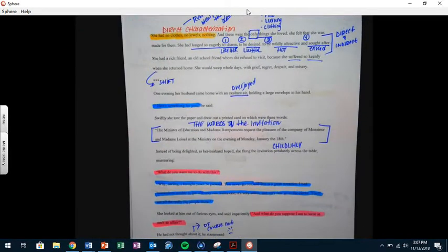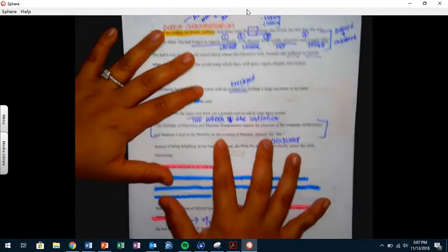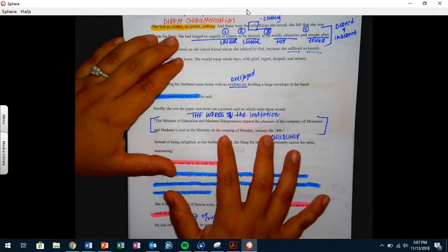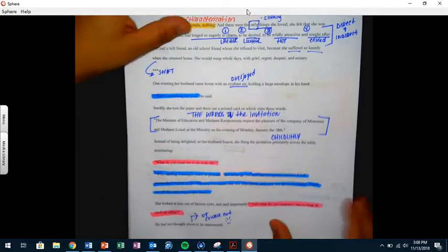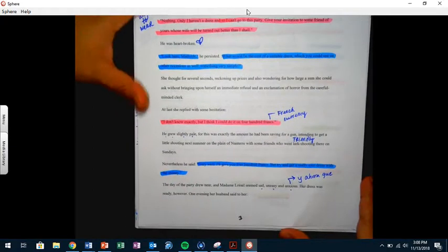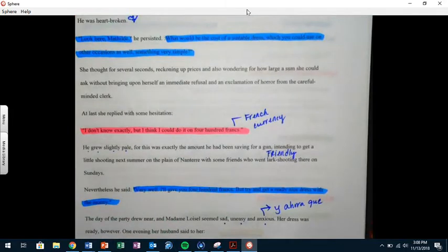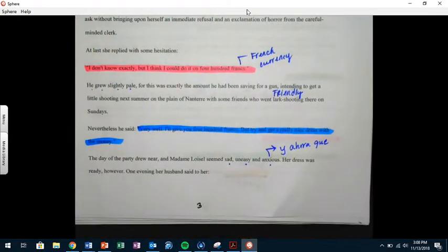We see here that they are invited to a ministry ball and she wants to go but she doesn't have anything to wear. We know that her husband gives her 400 francs so that she can go to this party. She gets her dress but she's not satisfied, she's sad and miserable because she doesn't have jewelry.